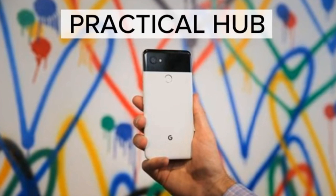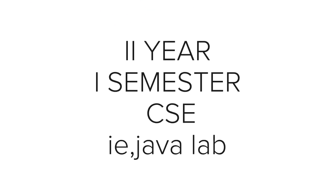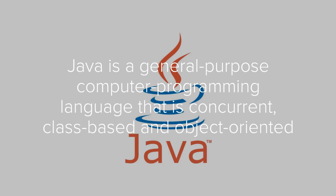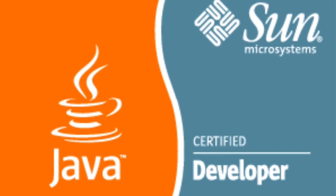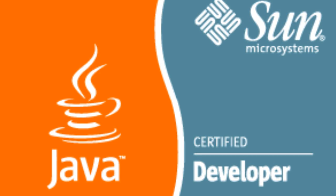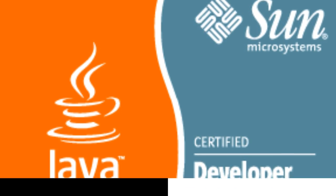Hello everyone and welcome to Practical Hub channel. In this video you are going to see about the Java lab that you will be pursuing in your second year first semester from the computer science department. Java is a general purpose computer programming language that is concurrent, class-based and object-oriented. Java was developed by Sun Microsystems in the year 1991 and later acquired by Oracle Corporation. It was developed by James Gosling.